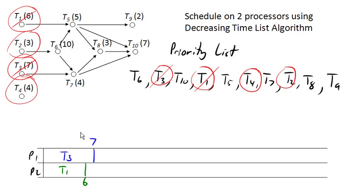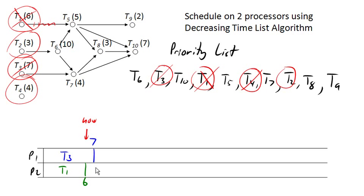Now we're going to fast forward in time to time six. At time six, task one gets completed. This order requirement is done. We ask, is anything new ready? The answer is no, because this task still has another requirement. So we go ahead and assign the next task on the priority list, which is task four.